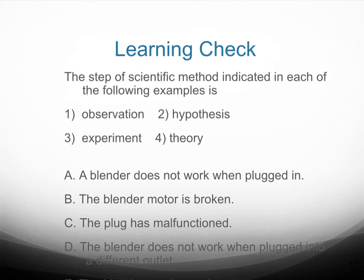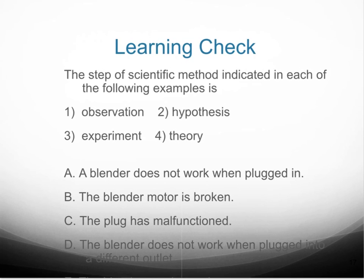Here we have a learning check. Go through each of A, B, C, and D and determine whether each statement is a hypothesis, observation, etc. For point A — a blender does not work when plugged in — you're observing that the blender doesn't work, so we label that as an observation. Go through the rest on your own. Don't look at the next slide, which has the answers — really try to do it yourself first, then check whether you got them correct.